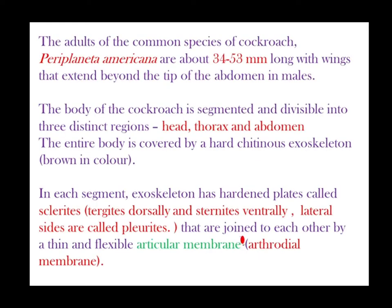Moving on to the morphology of Periplaneta americana. The adults of the common species are about 34 to 53 mm long, with wings that extend beyond the tip of the abdomen in males. The body of the cockroach is segmented and divisible into three distinct regions: head, thorax, and abdomen.